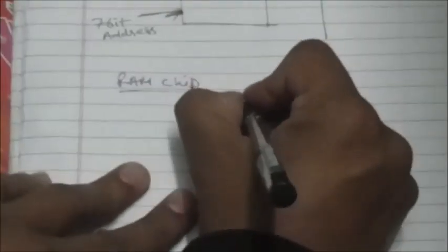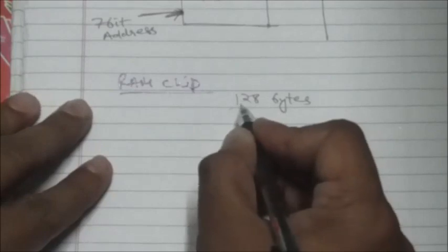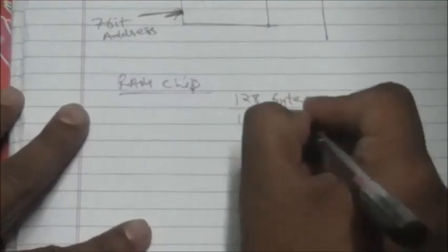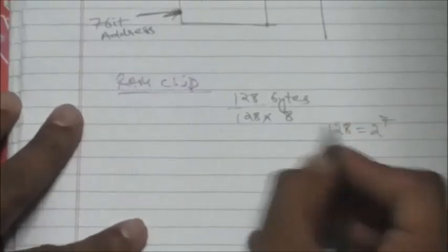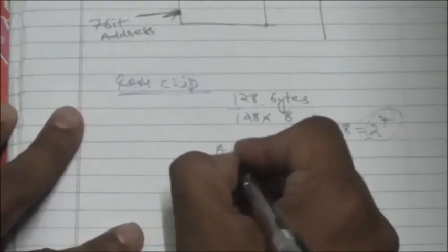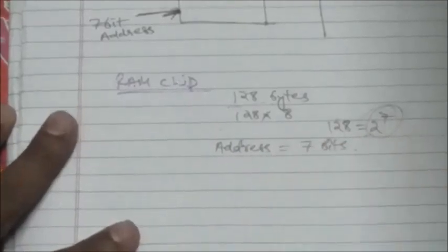Hello friends, welcome back. In this tutorial we will study about RAM chip and ROM chip. First we will study about RAM chip. Consider a RAM chip of 128 bytes — it has 128 words and each word contains one byte, or 8 bits. Since 128 equals 2 raised to power 7, to address 2^7 words we need a 7-bit address.